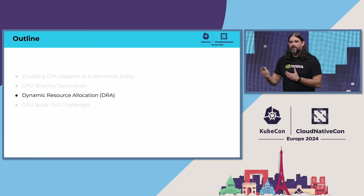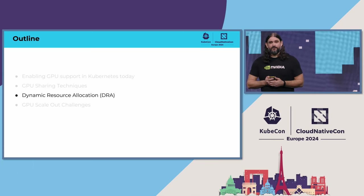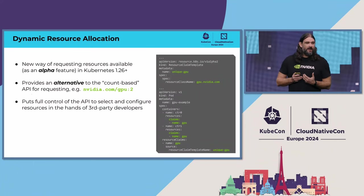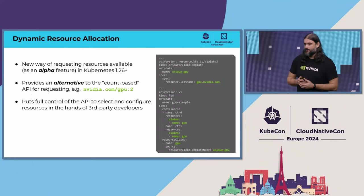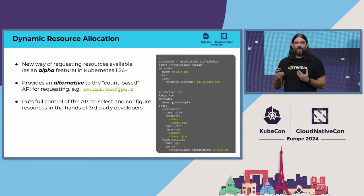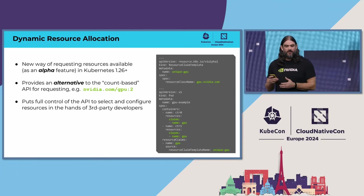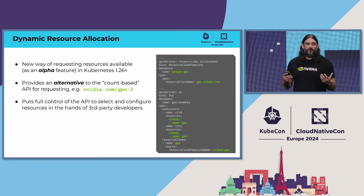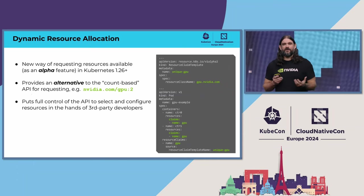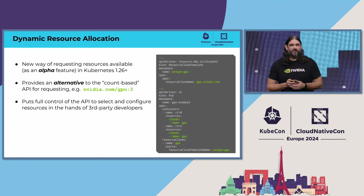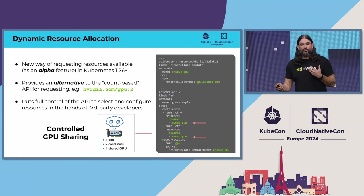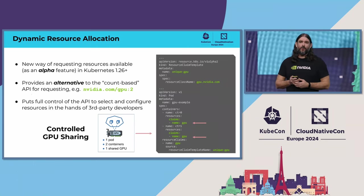The last thing I'm going to talk about before handing things over to Sanjay is DRA. DRA is a new way of requesting resources in Kubernetes, available as an alpha feature since 1.26. It provides an alternative to the count-based API for requesting resources like nvidia.com/gpu. What makes it so powerful is that it puts full control of the API to select and configure resources directly in the hands of third-party developers. It also gives one the ability to precisely control how resources are shared between containers and pods, which is one of the main limitations of the existing device plugin API as it stands today.